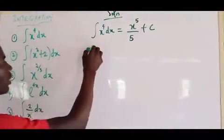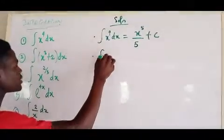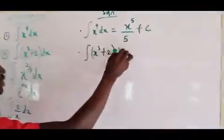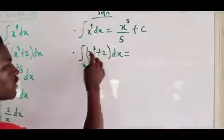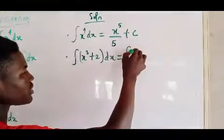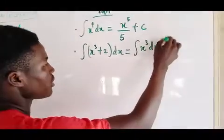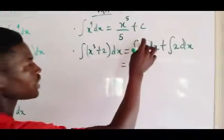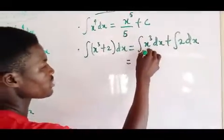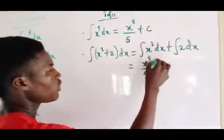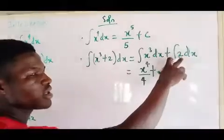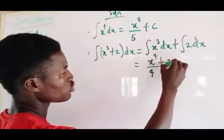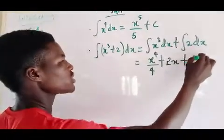The second example: integral of (x³ + 2) dx. First, apply the sum rule so that it becomes integral of x³ dx plus integral of 2 dx. The first part gives x to the power 4 over 4. The second term has no x variable, so it gives 2x, plus c.